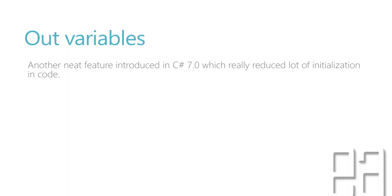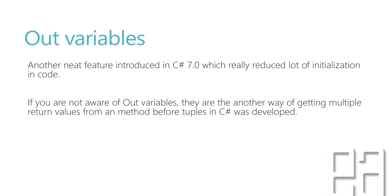Out variables are another neat feature introduced in C# 7.0 which really reduced a lot of initialization in code. I was really hoping this kind of feature would come very soon in C#, because it was really nagging while working with out variables in C# 6.0 and above. If you're not aware, out variables are another way of getting multiple return values from a method.